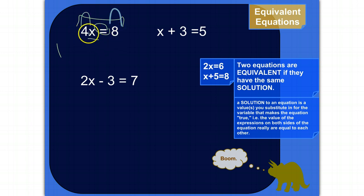So 4 times x needs to be the same thing as 8. So the solution to this equation would, of course, be 2, because 4 times 2 is equal to 8.